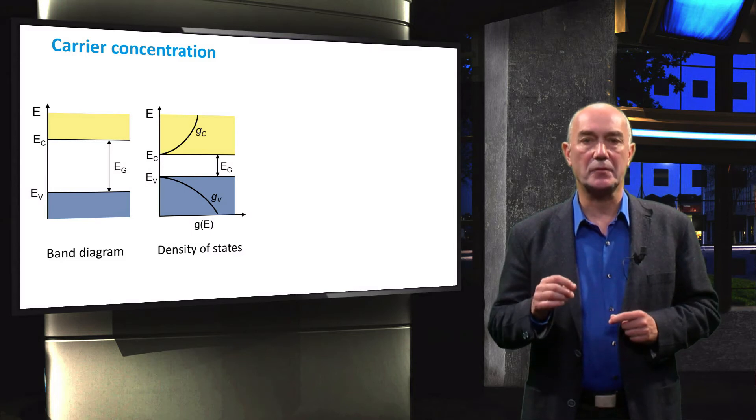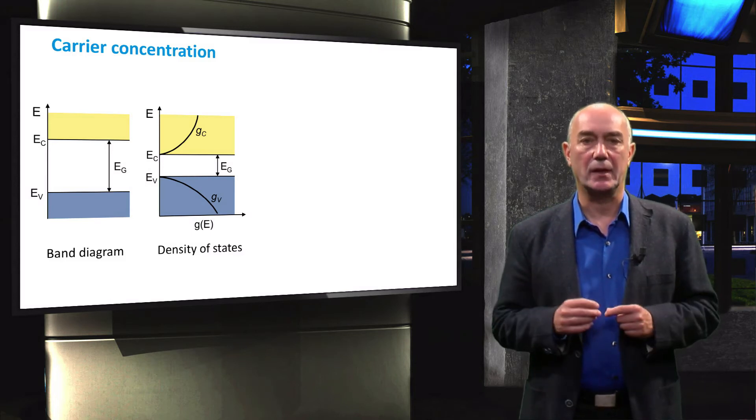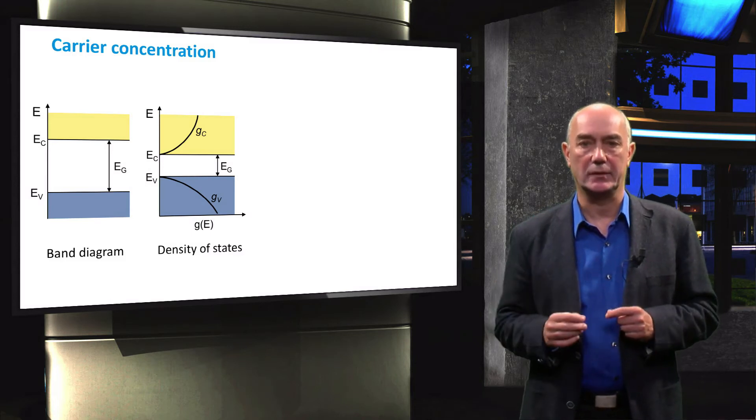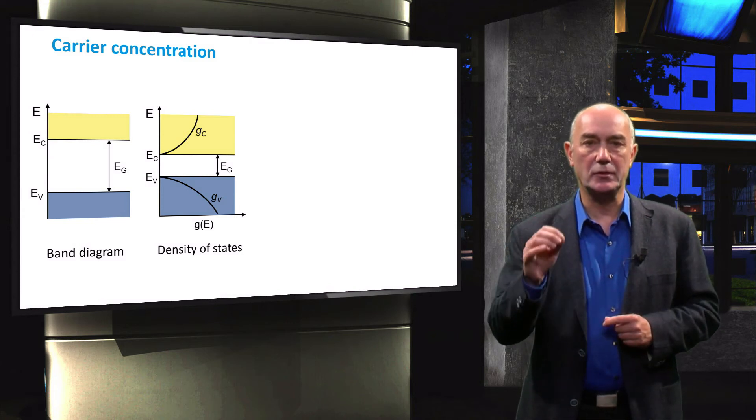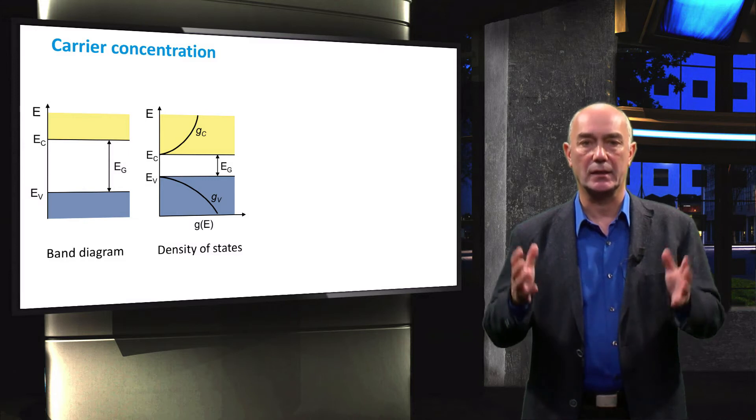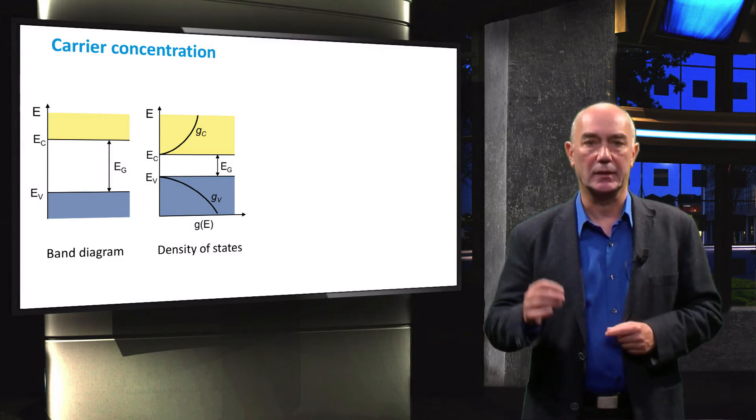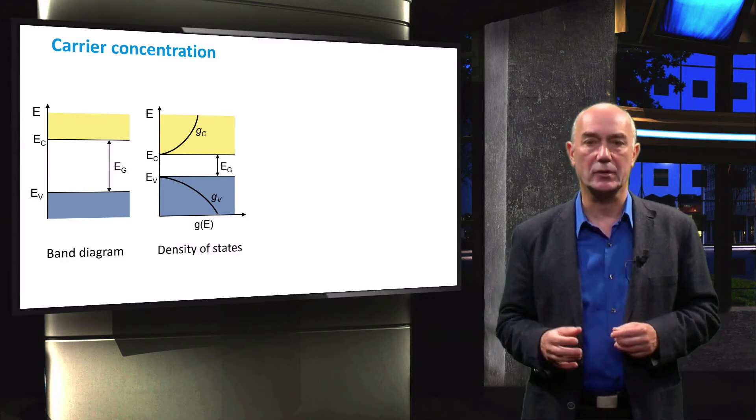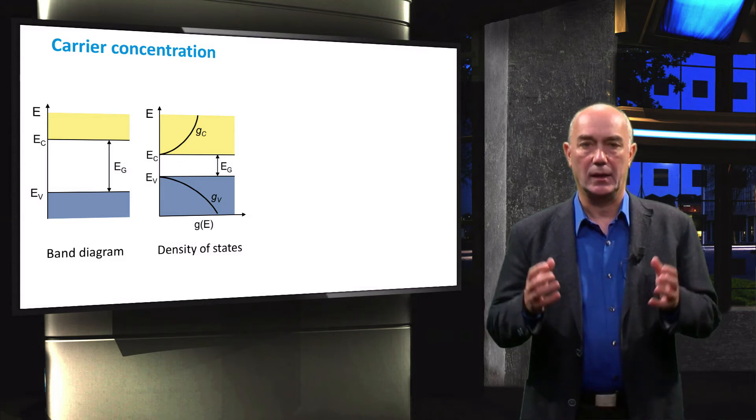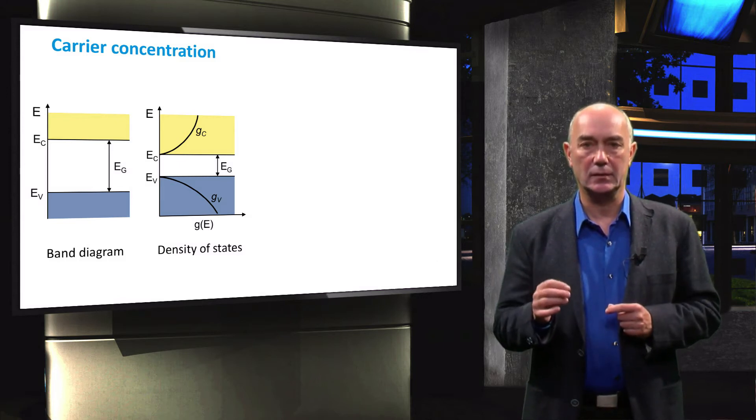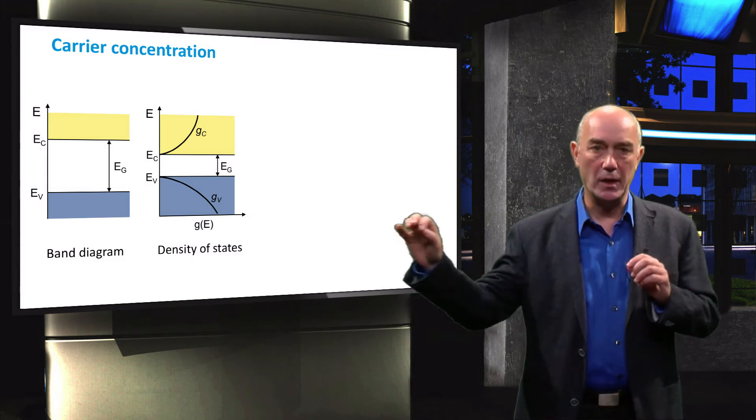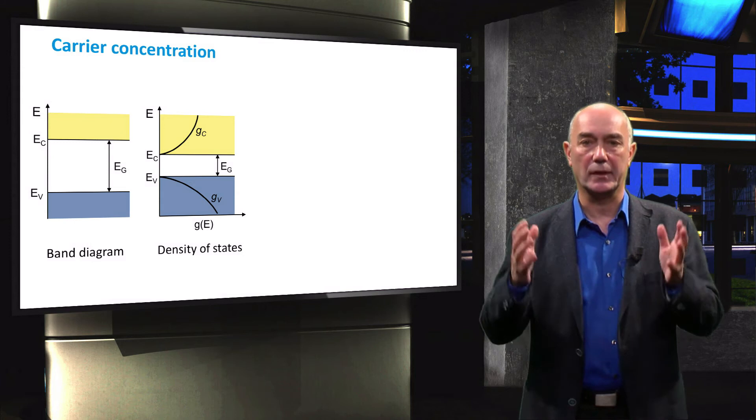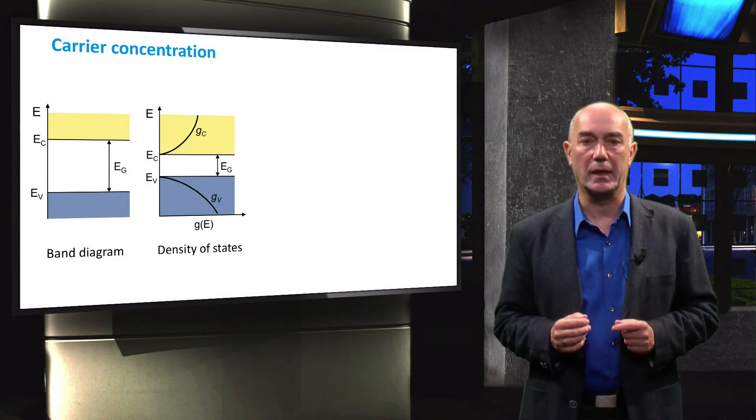Then we define the density of states function. This function is material dependent. The density of states function tells you the number of energy states at a certain energy level that are available for an electron to occupy. As you can see in this figure, in high-purity intrinsic semiconductor materials, there are no energy states available for an electron to occupy in the band gap.